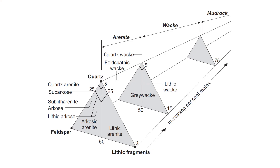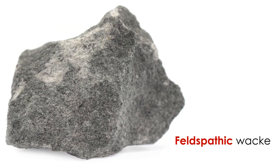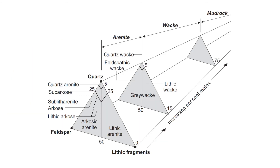Using the Toblerone plot, we can further classify arenites and wackes based on their mineral grains and clasts. For example, if a sandstone primarily consists of feldspar mineral grains, then we might call it an arkose arenite or a feldspathic wacke, as opposed to a lithic or quartz wacke or arenite. If a rock primarily consists of silt and clay-sized grains — or more than 75 percent matrix — we call it a mudrock.